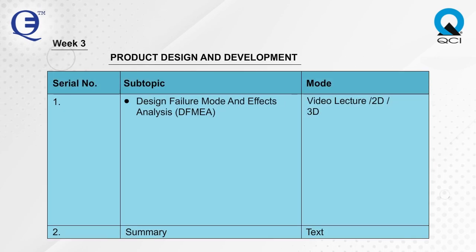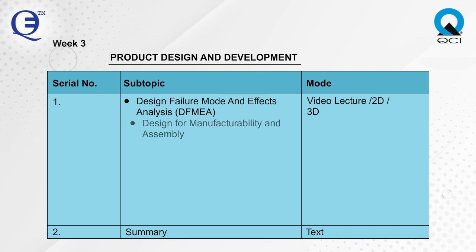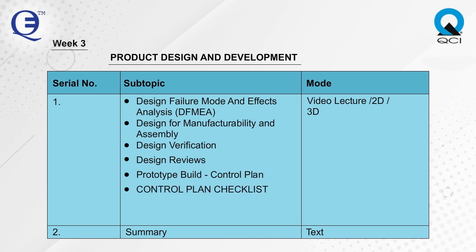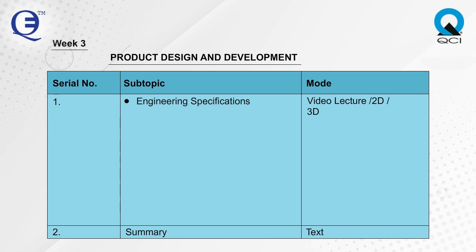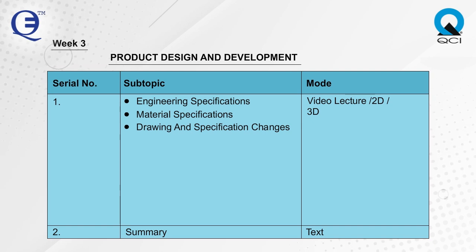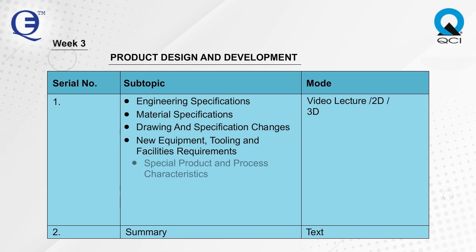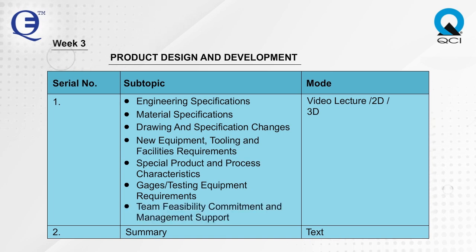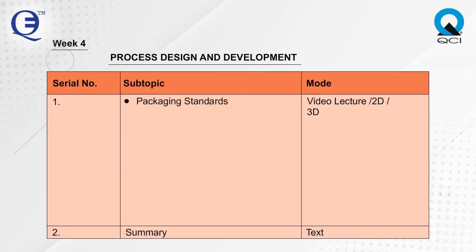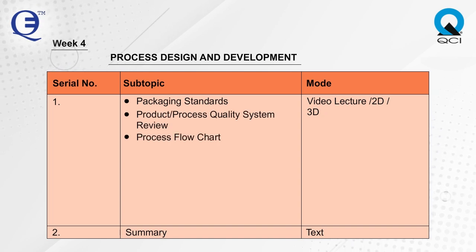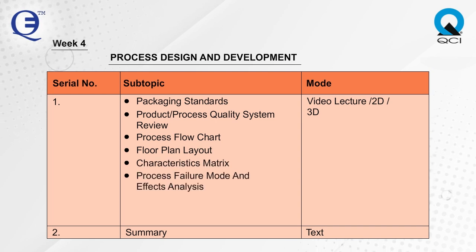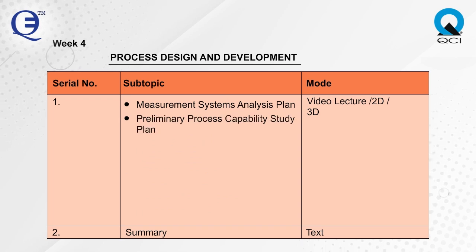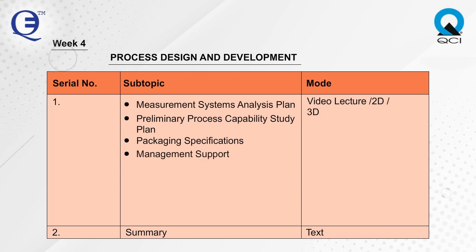Week 3 covers Product Design and Development, including Design Failure Mode and Effects Analysis (DFMEA), Design for Manufacturability and Assembly, Design Verification, Design Review, Prototype Build Control Plan, Control Plan Checklist, Engineering Drawings including Math Data, Engineering Specifications, Drawing and Specification Changes. Week 4 covers New Equipment, Process Design and Development, Packaging Standards, Product Process Quality System Review, Process Flow Chart, Floor Plan Layout, Characteristics Matrix, Process Failure Mode and Effects Analysis, Prelaunch Control Plan, Process Instructions, Measurement Systems Analysis Plan, Preliminary Process Capability Study Plan, Packaging Specifications, and Management Support.